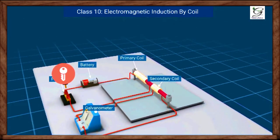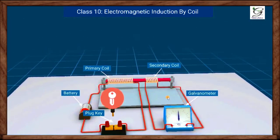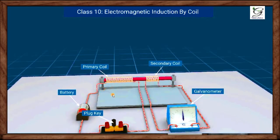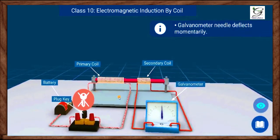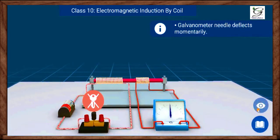Insert the plug key and observe galvanometer for deflection. There is a momentary current in the secondary coil. We can see that the galvanometer deflects momentarily. Galvanometer needle jumps to one side and quickly returns to zero.